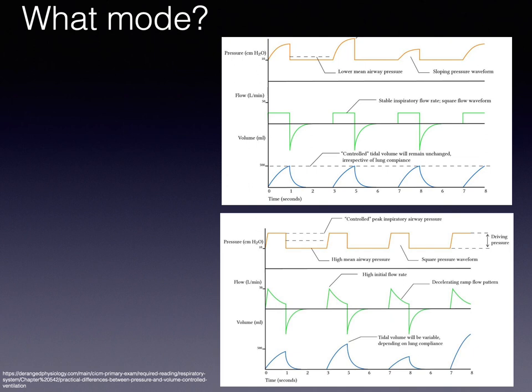You will see a common screen on the ventilator with a pressure curve, a flow curve, and a volume curve. To know which mode it is, look at what parameter is flat. For example, if the flow is flat, it means during the inspiratory cycle the flow was constant — this is volume AC. On the bottom graph, if the pressure is flat during the inspiratory cycle, this is pressure assist control. The tip is to identify which parameter is constant — which parameter is flat on the curve.